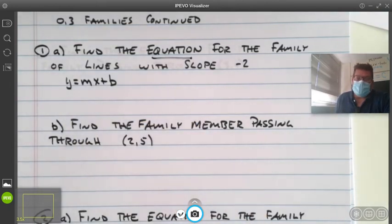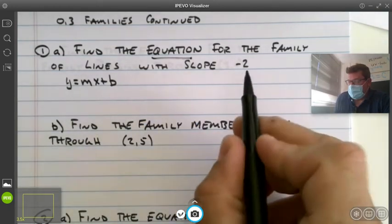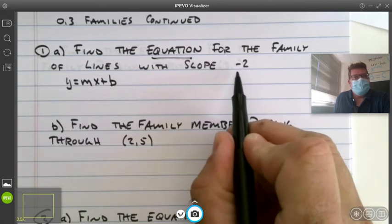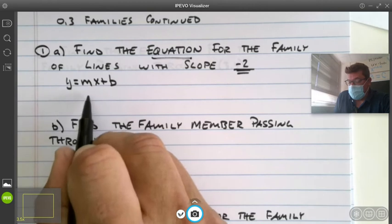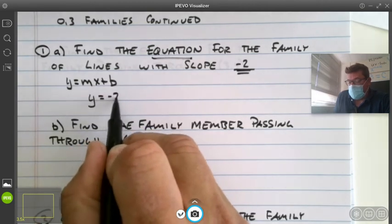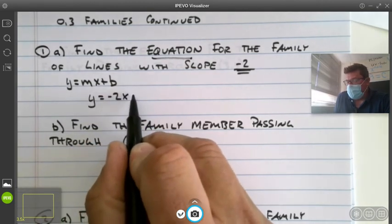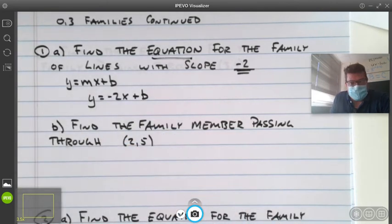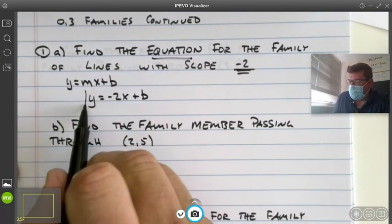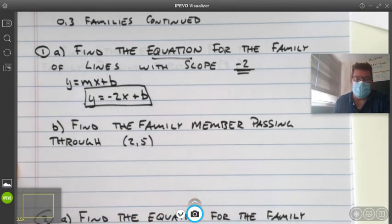Now the strange thing about these problems is the solution is generic. We're just going to shove this slope in for m, and then that's where we stop. Once we have that negative two in for m, we are done. That is the equation for the family of lines with slope negative two.